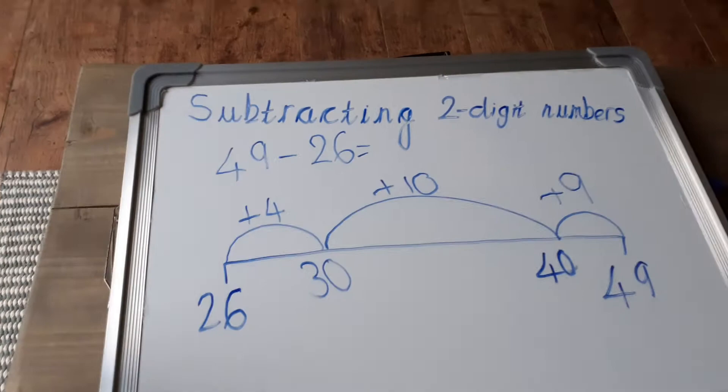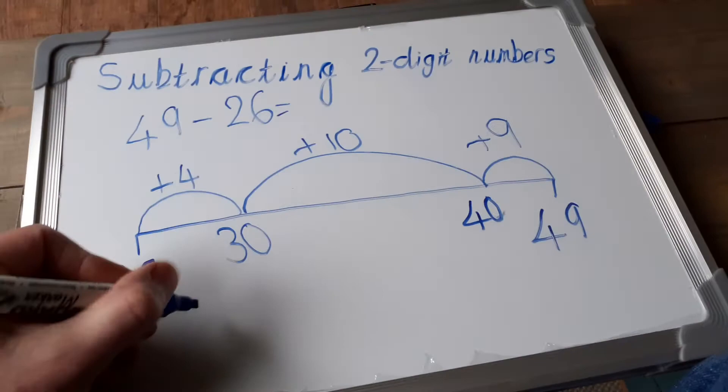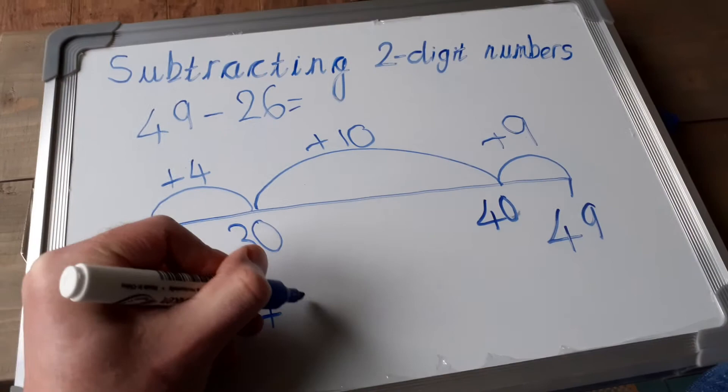So we've got 19, and we're going to add the 4. So 19 add 4. Okay. And if you do 19 add 4, you get 23.